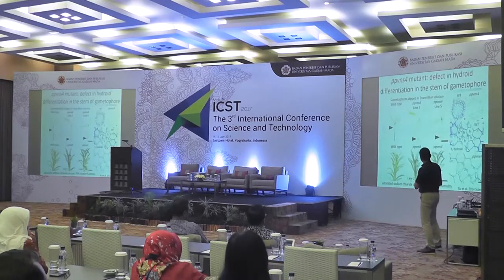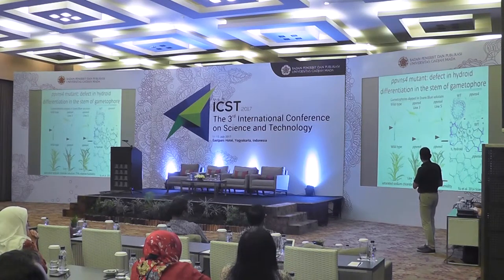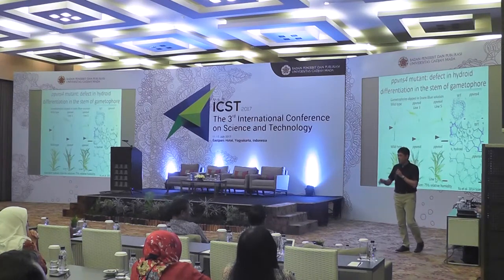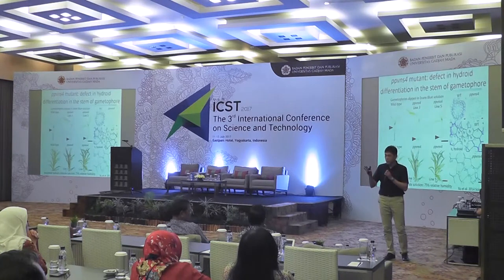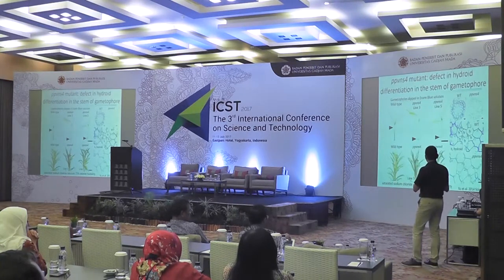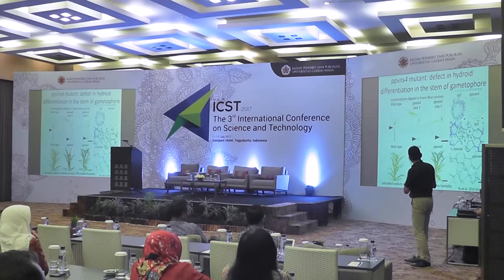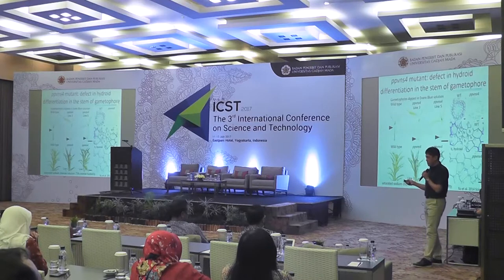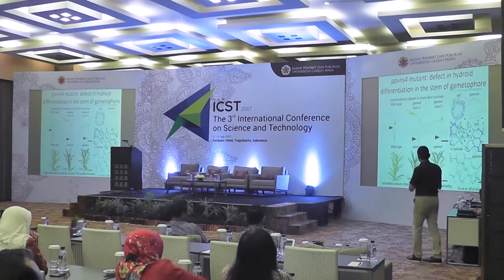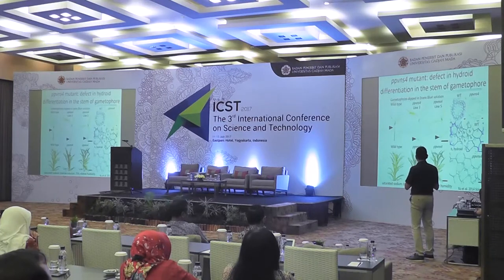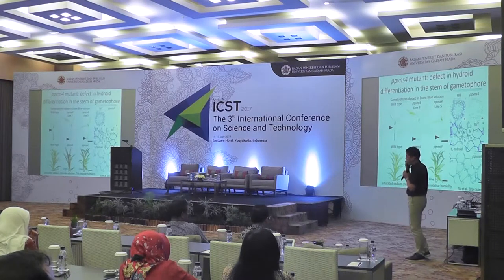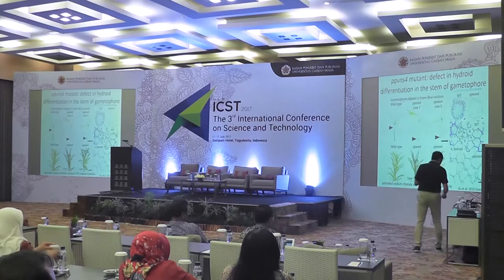If we knock out one gene, PPVNS4, in this case the plant cannot grow well under low humidity. This is loss of hydroid cells — H means hydroids, the water-conducting cells. In this mutant we cannot see any hydroids, and they cannot grow correctly. We also analyzed expression downstream of VNS in moss and found some important genes related to cell differentiation. The gene regulatory network downstream of these regulators is really highly conserved during evolution.